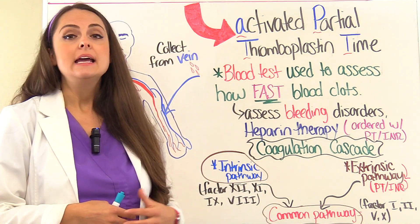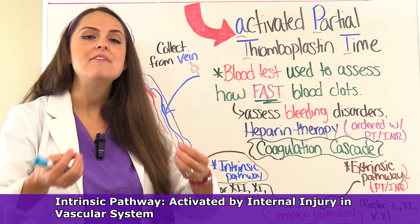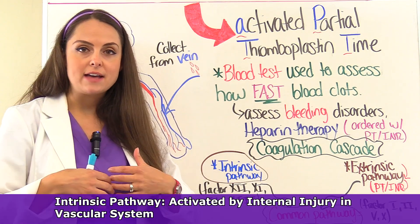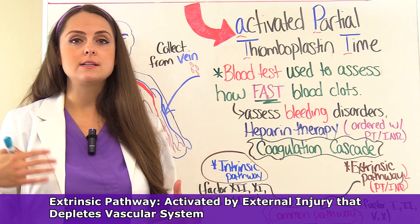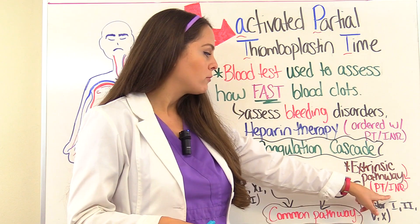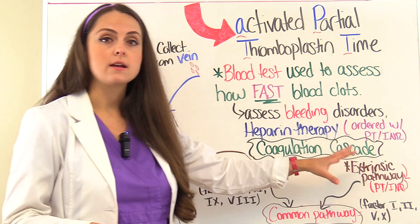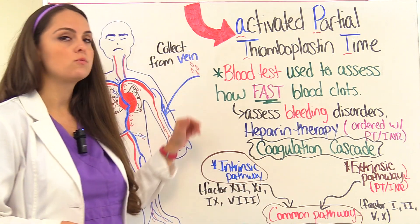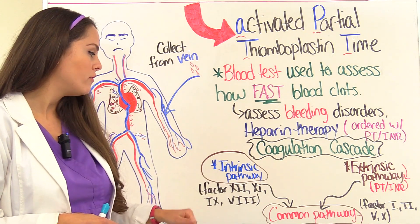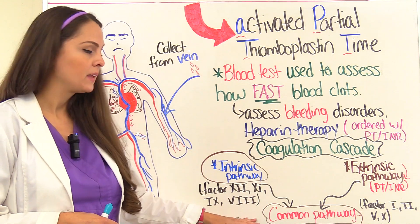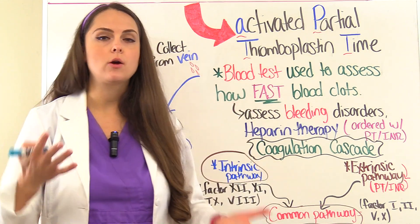An APTT is going to check the intrinsic pathway. The intrinsic pathway is activated when we have internal damage or injury within the vascular system. The extrinsic pathway is activated when we have external injury depleting the vascular system of blood. When we talked about the PT-INR, that blood test was checking the extrinsic pathway and its associated clotting factors. The APTT checks the intrinsic pathway, which deals with clotting factors 12, 11, 9, and 8. It's also going to look at the common pathway — really how the intrinsic pathway and the common pathway are working together.